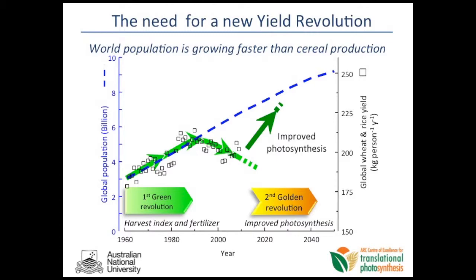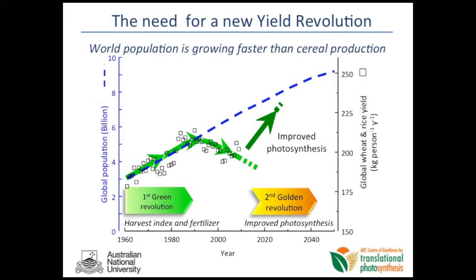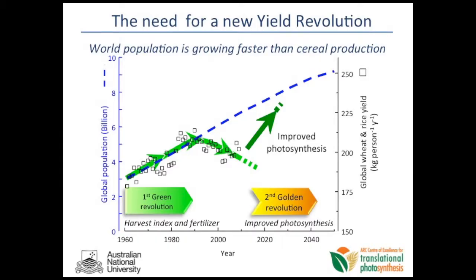So what is the basis for actually thinking that we need a new Yield Revolution? It's contained in this diagram here, where basically if you look at the yields over the last 40 years or so, they've been increasing at a certain rate in regard to wheat and rice. But over the last 10 years or so, the yield increases have stagnated, but population growth has kept going. This leads to the notion that we need to do something about improving yields to more closely match population demand. I've provocatively put that the first Yield Revolution was based on harvest index and fertiliser responses, and the second yield increase may be underpinned by improved photosynthesis, but that remains to be proven.